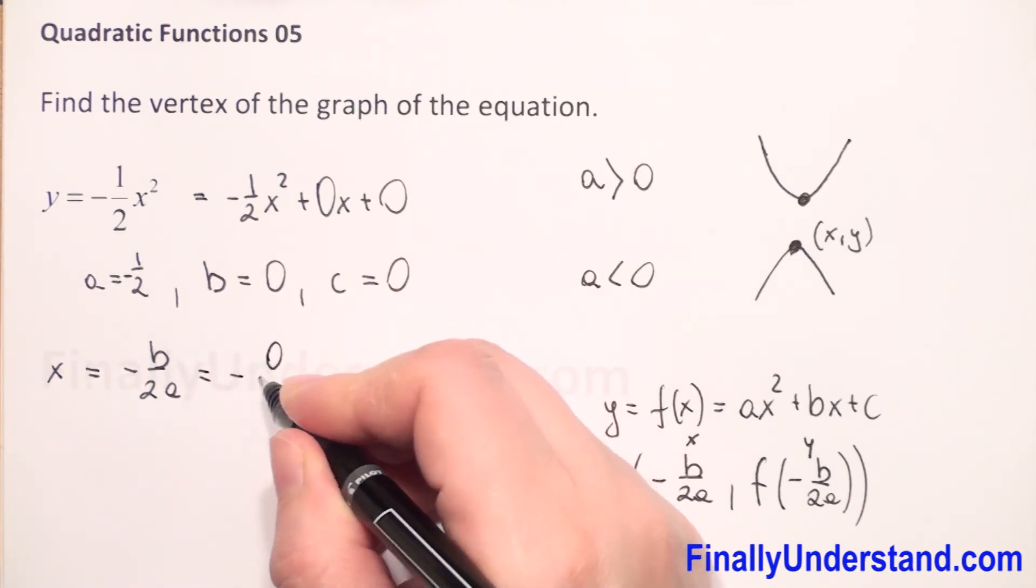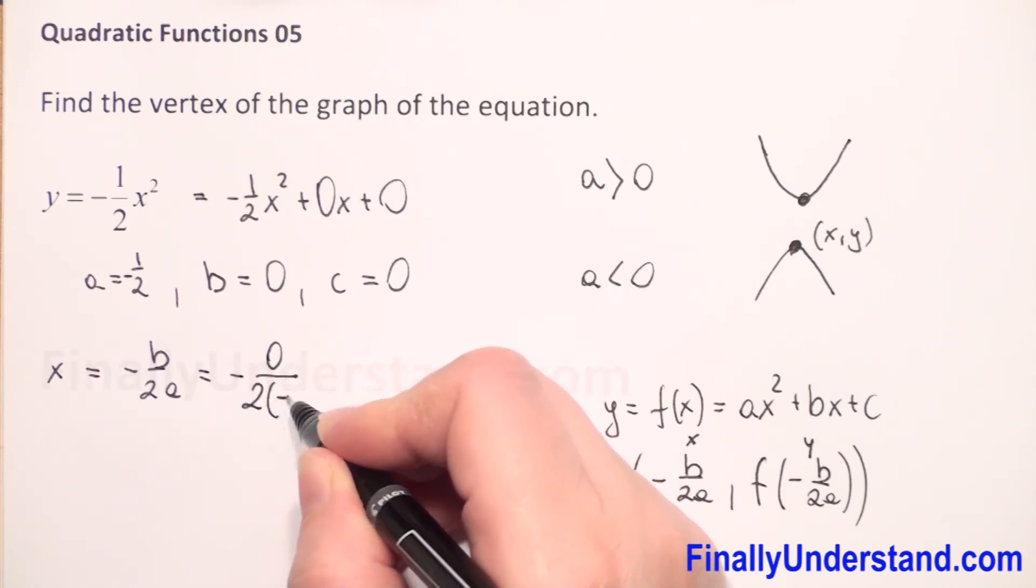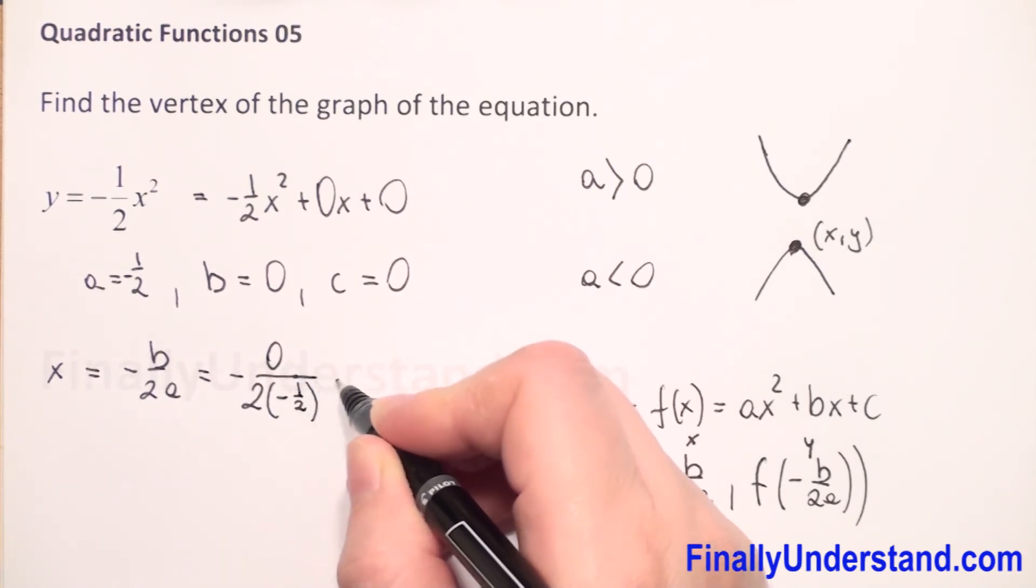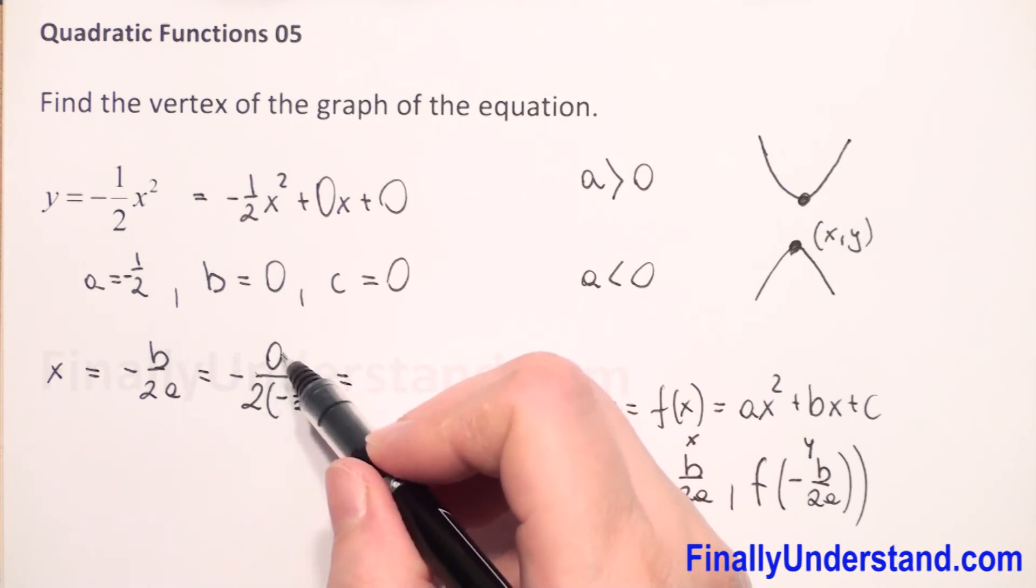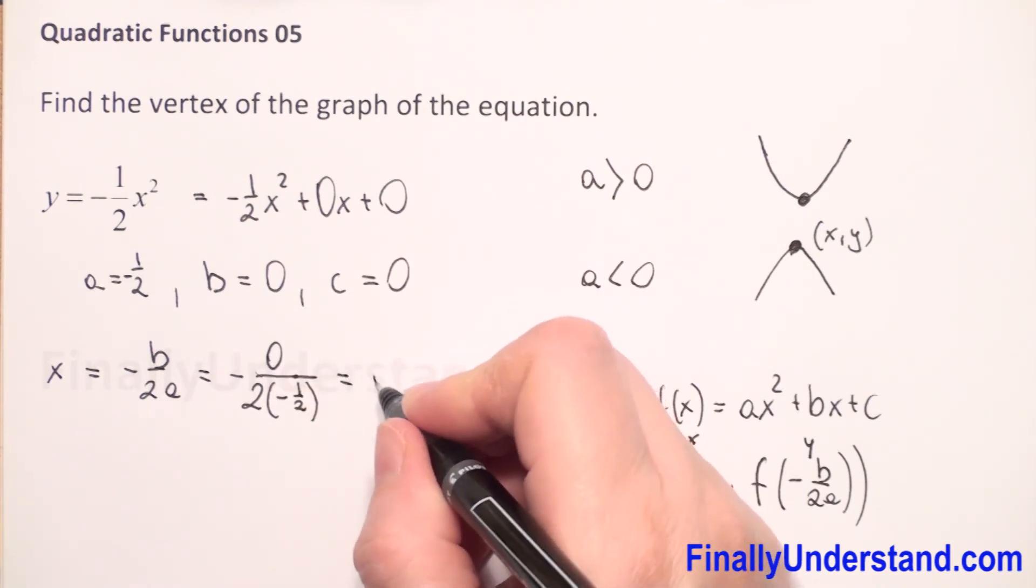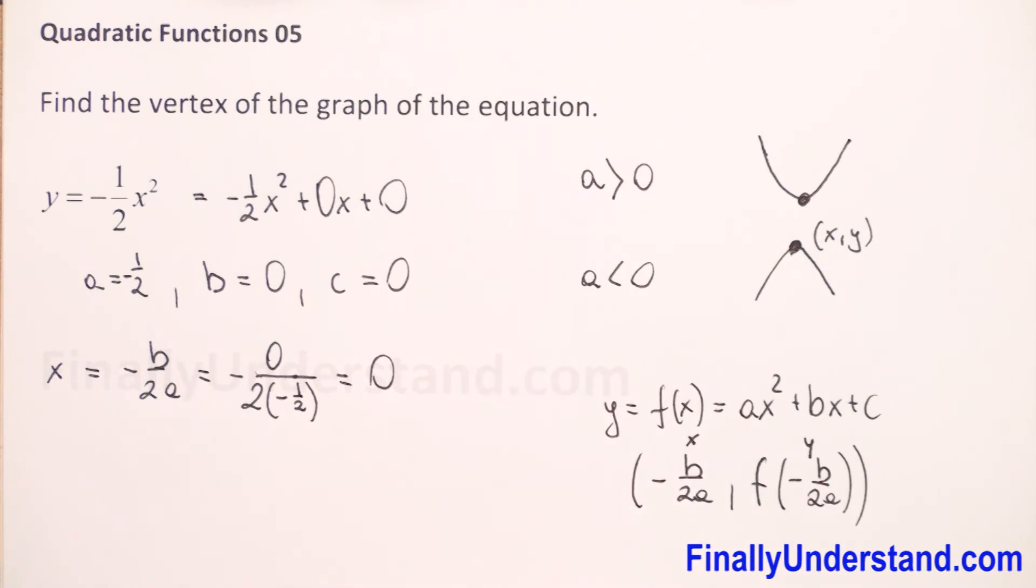Over two times negative one half. This is equal, of course, because we have zero in the numerator, this is equal zero. We don't have to calculate our denominator.